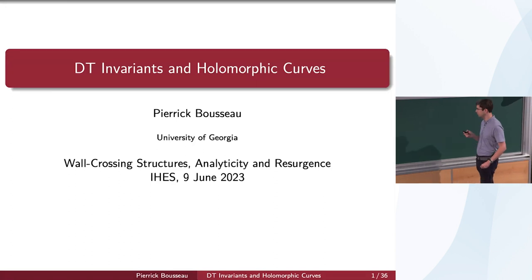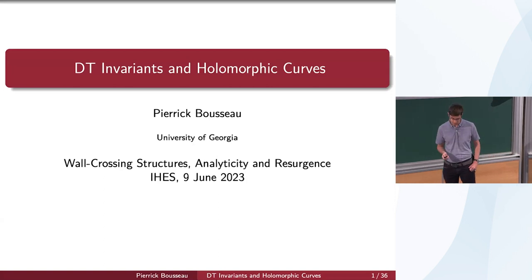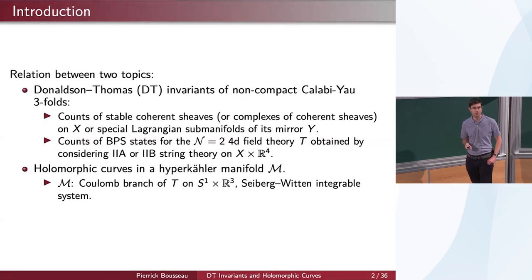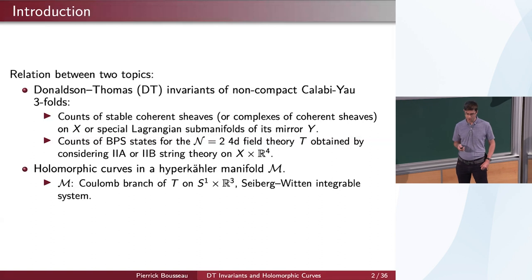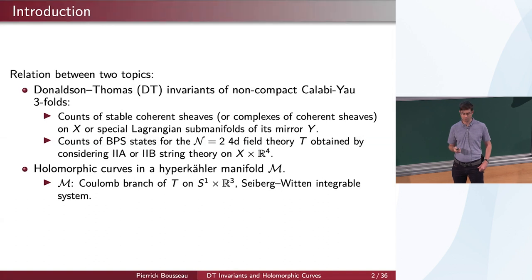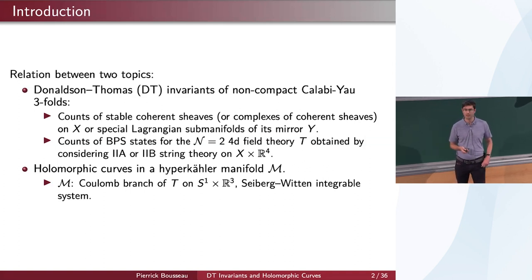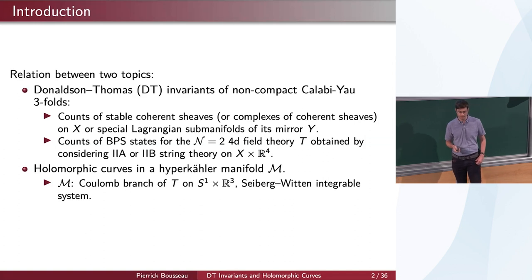In particular we'll talk about two geometric numbers: DT invariants and holomorphic curves. On one side we'll talk about Donaldson-Thomas invariants of non-compact Calabi-Yau threefolds, which geometrically has to do with counts of coherent sheaves or complexes of coherent sheaves on some non-compact Calabi-Yau threefold X, which are stable in an appropriate sense. Or from a mirror point of view it might be something about counting special Lagrangian submanifolds of some mirror non-compact Calabi-Yau threefold Y. From a physics point of view these numbers are supposed to be related to counts of BPS states in some N=2 supersymmetric four-dimensional field theory, obtained from ten-dimensional string theory compactified on your non-compact Calabi-Yau threefold.